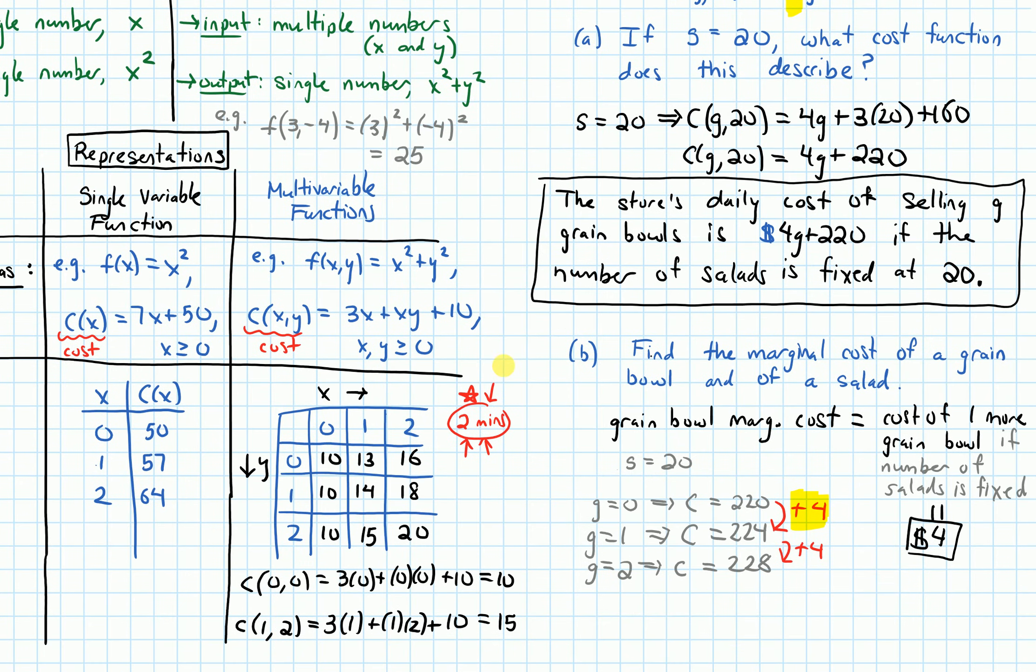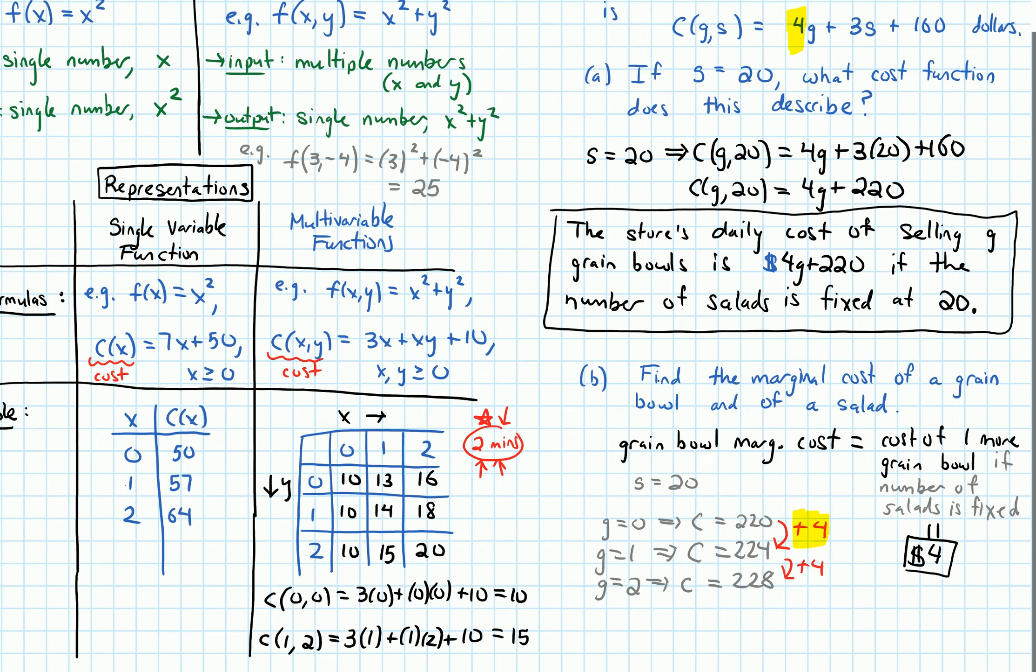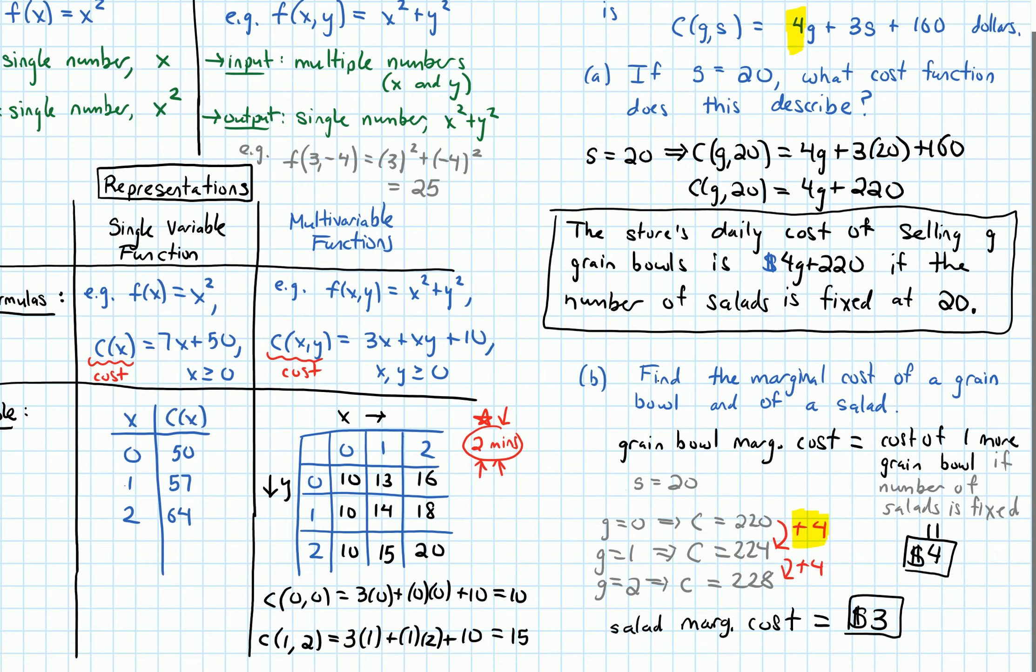But we can use that to figure out the marginal cost of salads quickly. So the salad marginal cost would be, what's the coefficient of S in this equation? It's 3. Okay, that's the salad marginal cost. So 3 is the same as this coefficient right here.